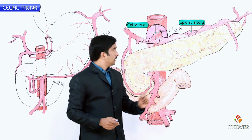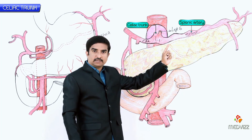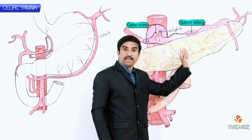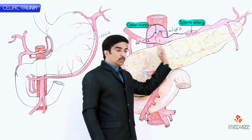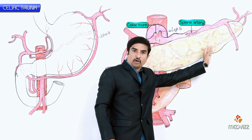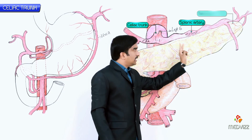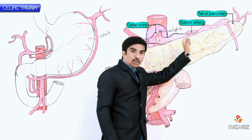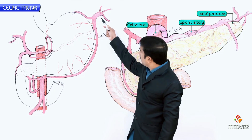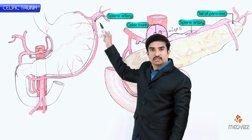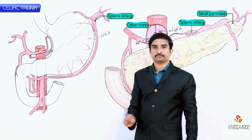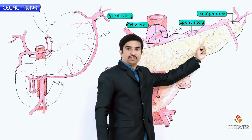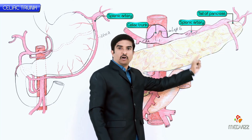The splenic artery is the largest branch of the celiac trunk. It takes a tortuous course towards the left, running along the superior border of the pancreas to reach the tail of the pancreas, where it divides into numerous branches that enter the hilum of the spleen. As it passes along the superior border of the pancreas, it gives off numerous small branches to supply the neck, body, and tail of the pancreas.